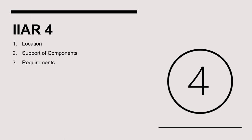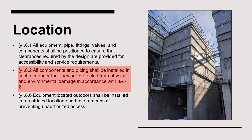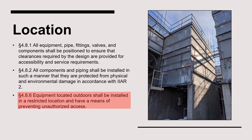Moving on, we'll dig into the condenser installation requirements in IIAR Standard 4. Section 4.8 requires that all equipment be positioned to ensure clearance is provided for accessibility and service requirements. Furthermore, the condenser must be protected from both physical and environmental damage. When installed outdoors, equipment must be in a restricted location and have a means of preventing unauthorized access.